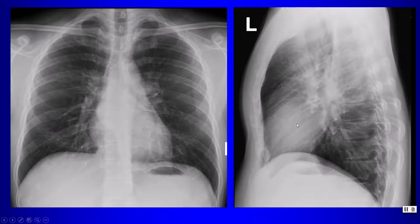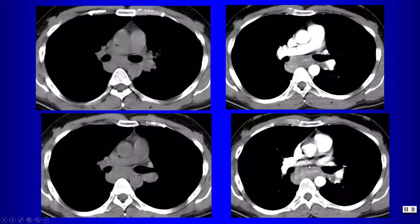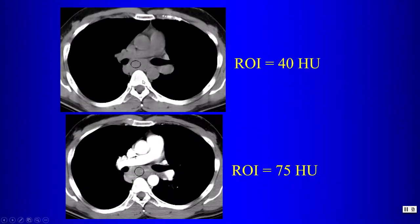On the chest radiograph we see deviation of the azigoesophageal line; on the lateral view there is a vague subcarinal opacity. On CT, the mass might first suggest a bronchogenic cyst, but comparing non-contrast and post-contrast images the mass is clearly enhancing — ruling out a bronchogenic cyst. This was subcarinal lymphadenopathy in a patient with tuberculosis.